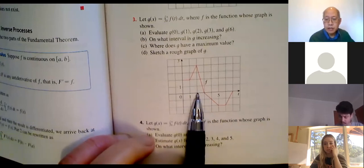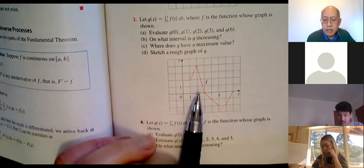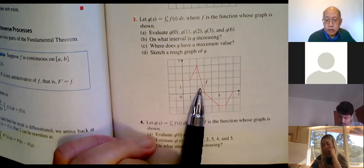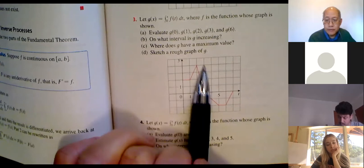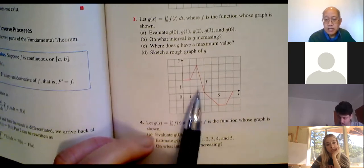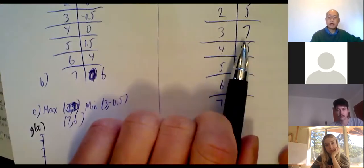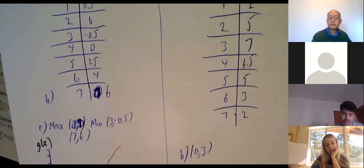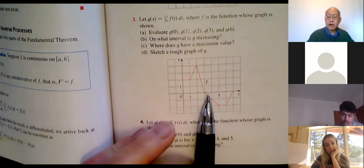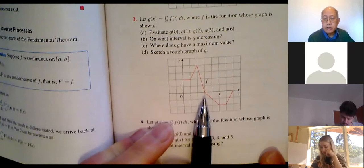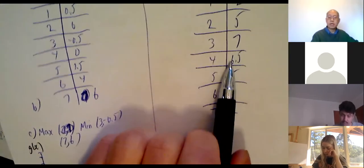Between two and three, how much extra do I pick up? I get a triangle — using the rectangle strategy: four squares total, the line cuts it in half, so that's an extra two. Adding two to the five I had gives g(3) = 7. After that I start going negative, so I'll be subtracting. Between three and four I subtract half a square, dropping from 7 to 6.5, so g(4) = 6.5.